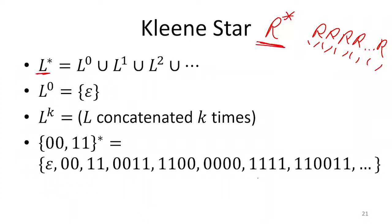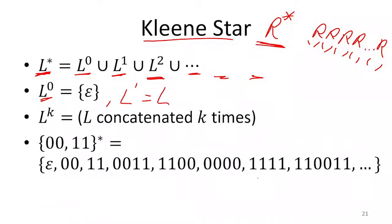The operation this is doing is the Kleene star on the language, where we say that the language raised to the star power. It says concatenate that language with itself zero times and union those strings with the strings you get by concatenating the language with itself one time, then two times, three times, four times, and so forth. The language concatenated with itself zero times is just the set containing the empty string, and the language concatenated with itself one time is just the language itself.